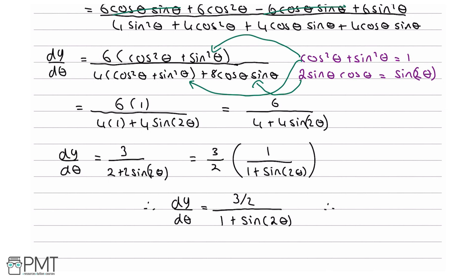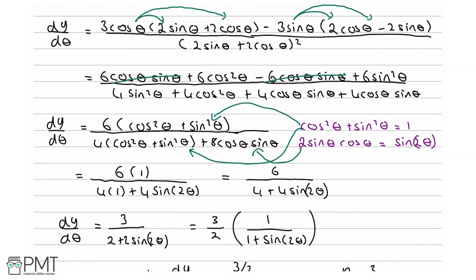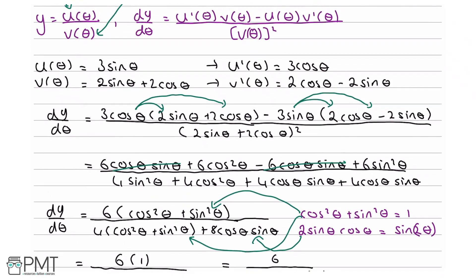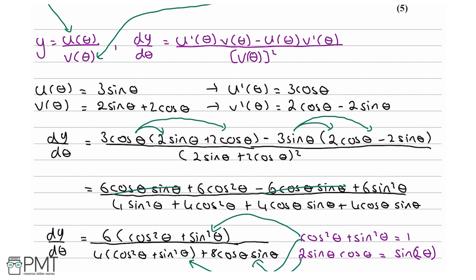Therefore a equals 3/2. This question is worth five marks. Your first mark comes from getting a correct expression for dy/dθ using the quotient rule, which gives you your first two marks for the question.